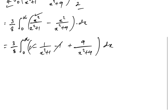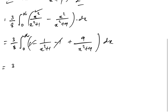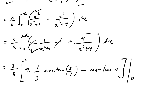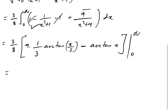After simplification, the terms with 1 cancel out and we're left with constants over (constant plus x squared) terms: minus 1 over (x squared + 1) plus 9 over (x squared + 9). These are arctan forms. So we get 3 over 8 times: [one-third arctan(x/3) minus arctan(x)] evaluated from 0 to infinity.